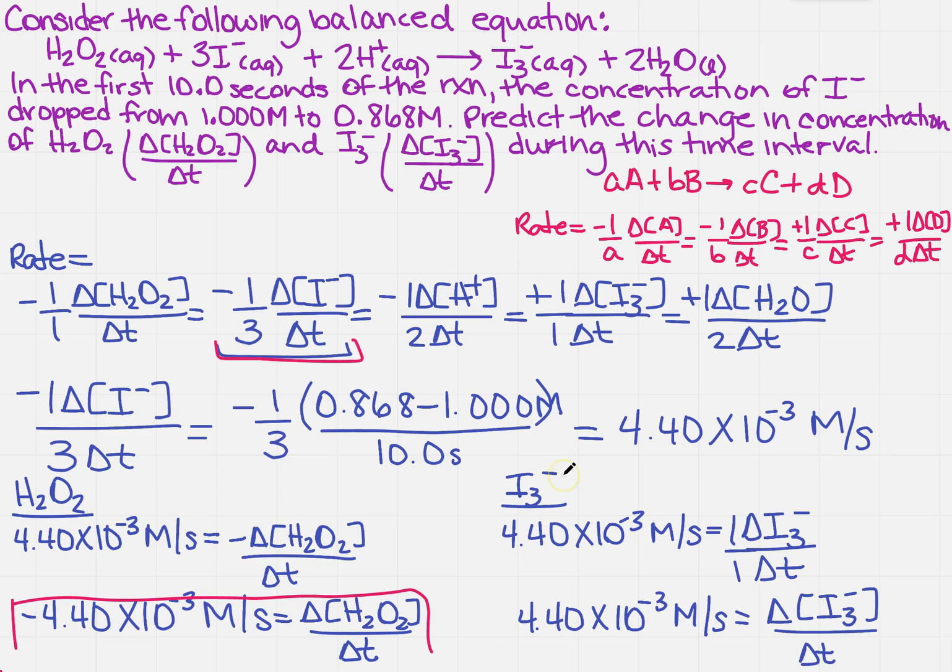Now for the I3 negative, same thing. I took what I found, which is 4.40 times 10 to the minus 3. I set it equal to the factor up here, which is positive. I went ahead and left the 1 over 1 just to show you that it's the same as what's above. This one there's nothing to divide, so that's going to be my final answer.